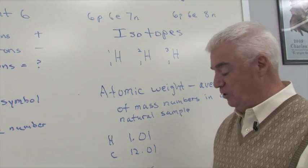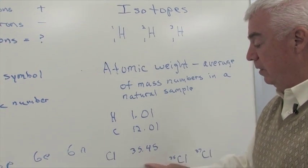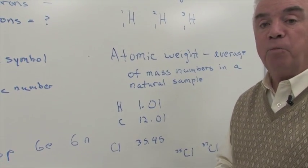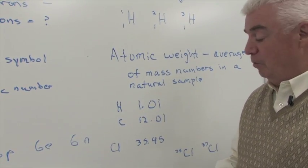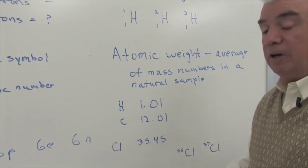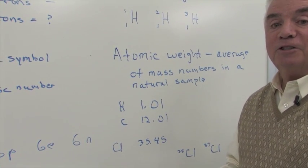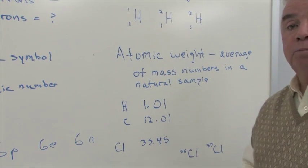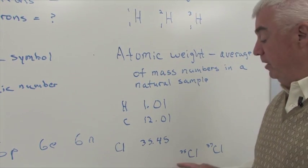Let's look at one more example, chlorine. The atomic weight on the periodic chart of the elements is listed as 35.45. Well, the fact that it's not a whole number tells us that there are probably some isotopes, and we have two isotopes of chlorine, 35 and 37.